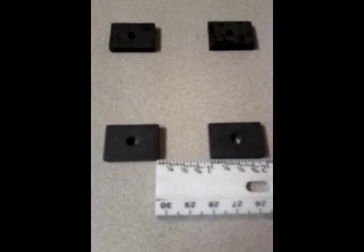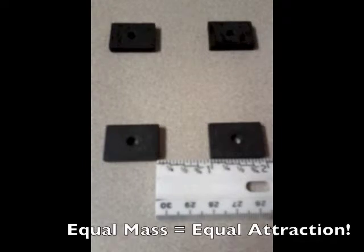Here we have four exact magnets, each of equal size and mass. Therefore, according to the law of gravity, they should also have an equal amount of attraction between them.